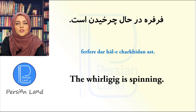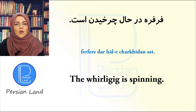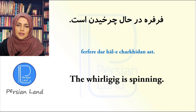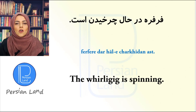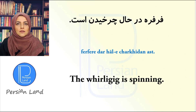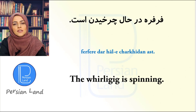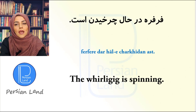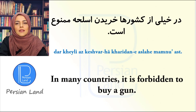فرفره در حال چرخیدن است. فرفره is a spinning top. در حال چیزی بودن is used to show the progressive tense — در حال چرخیدن است means 'is spinning'.